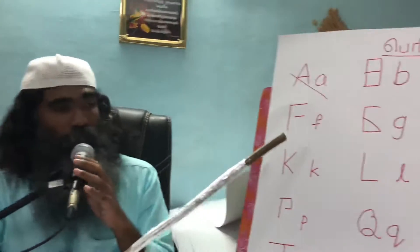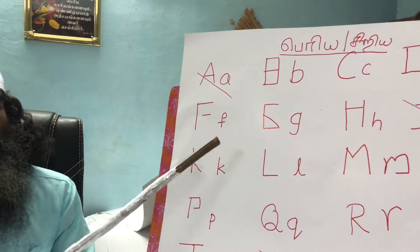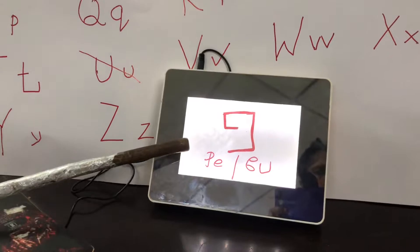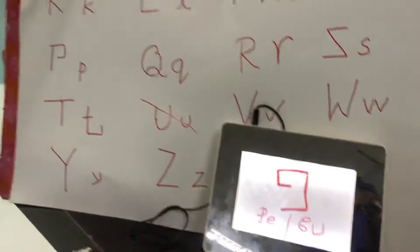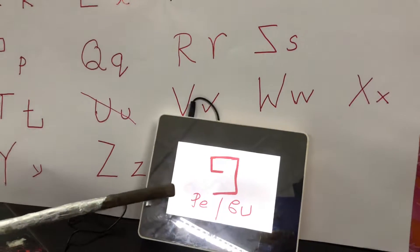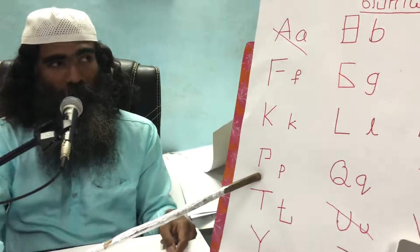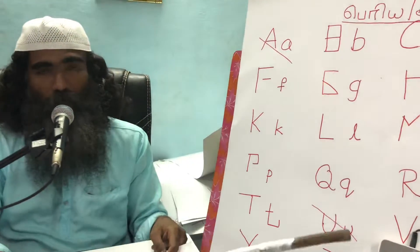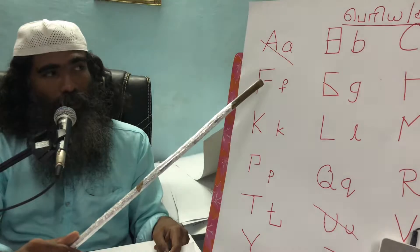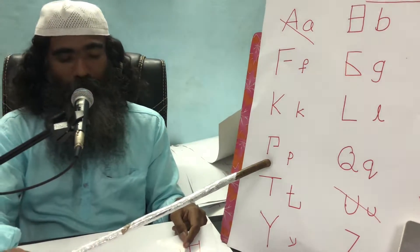From the English letter F, capital, I am going to derive the Hebrew letter Pe. Both have the same sound Pa. This Pe can also be derived from the English letter P. This is not very important, but for completion's sake I am telling you this same letter can be derived from the English letter P.